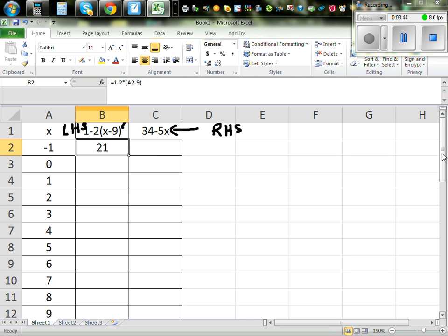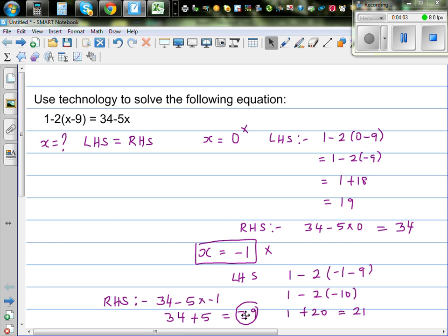Now for this, this is your right hand side which is equal to 34 minus 5 times this cell which is A2. That is 39. So right hand side is 39 and left hand side is 21.